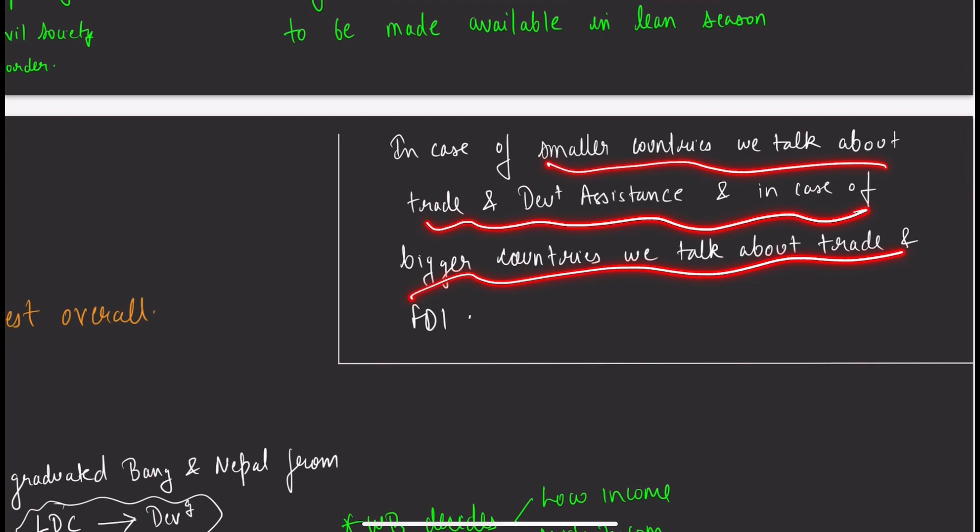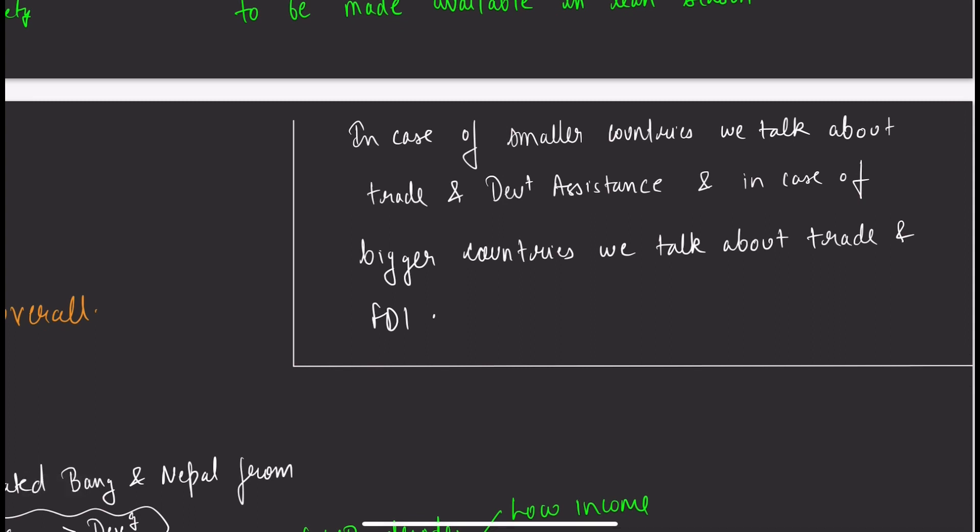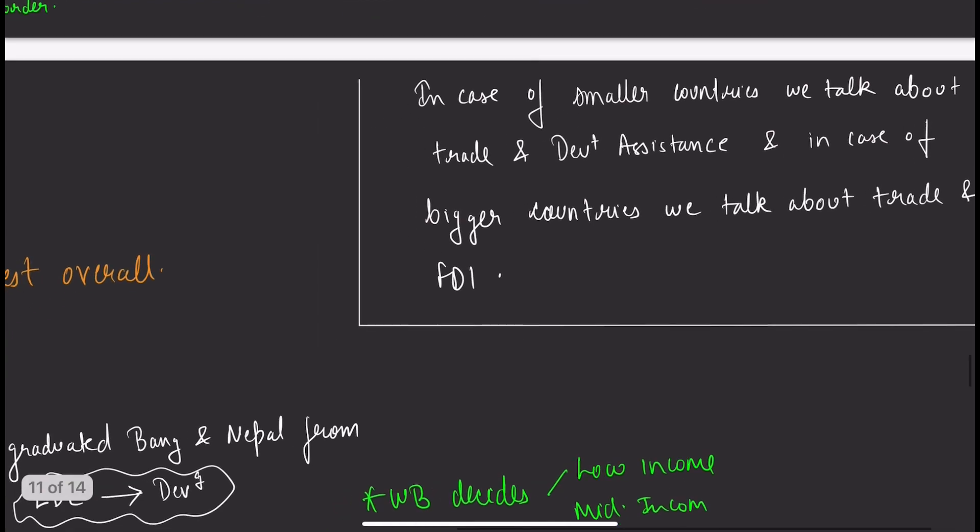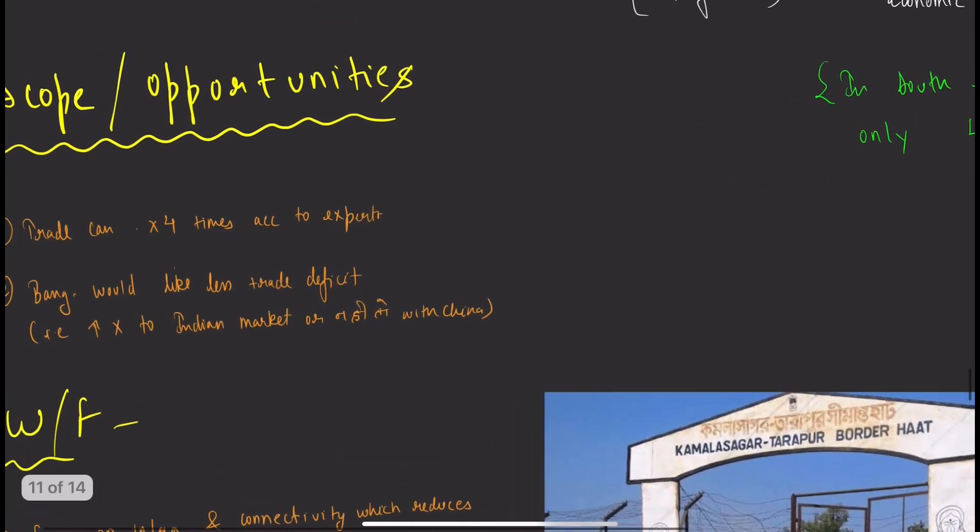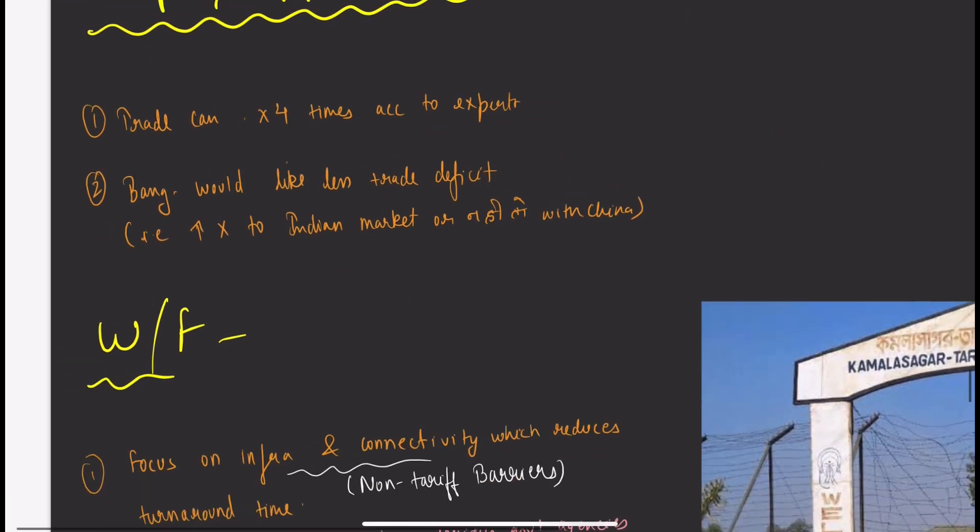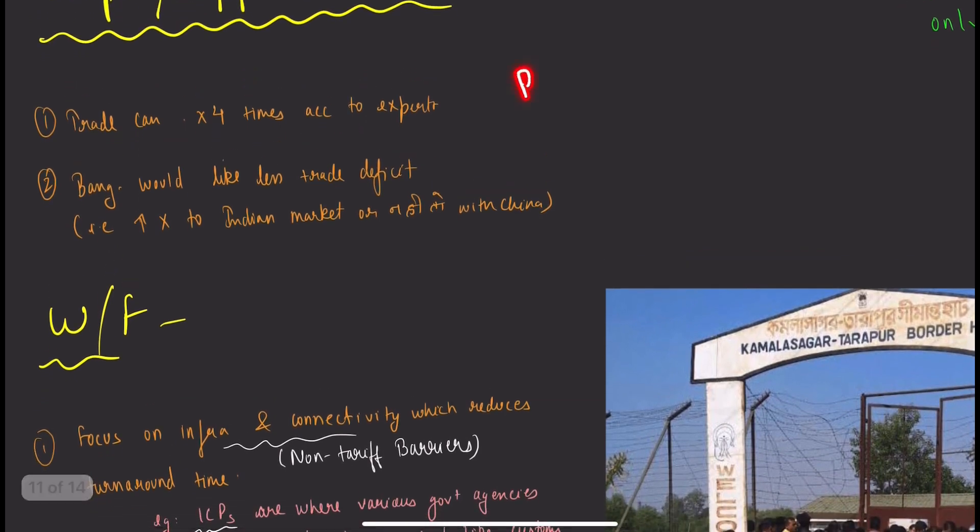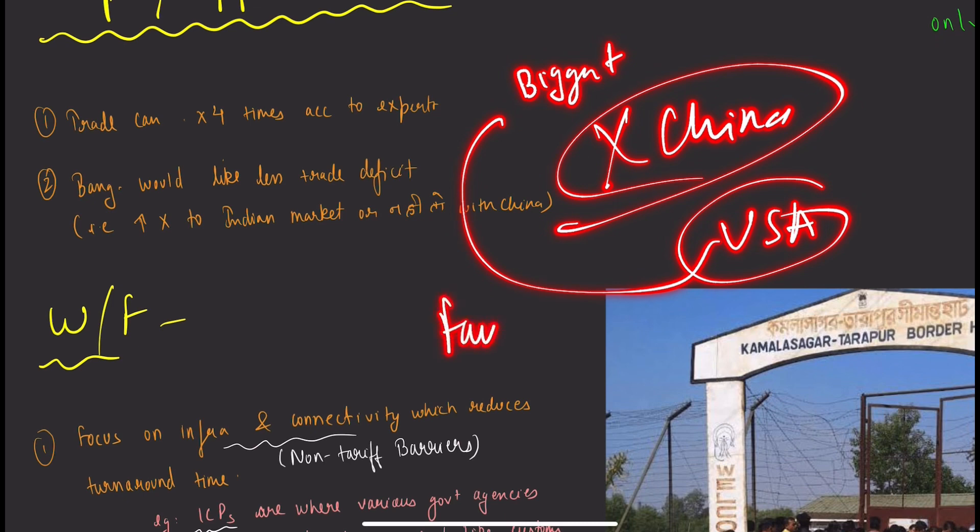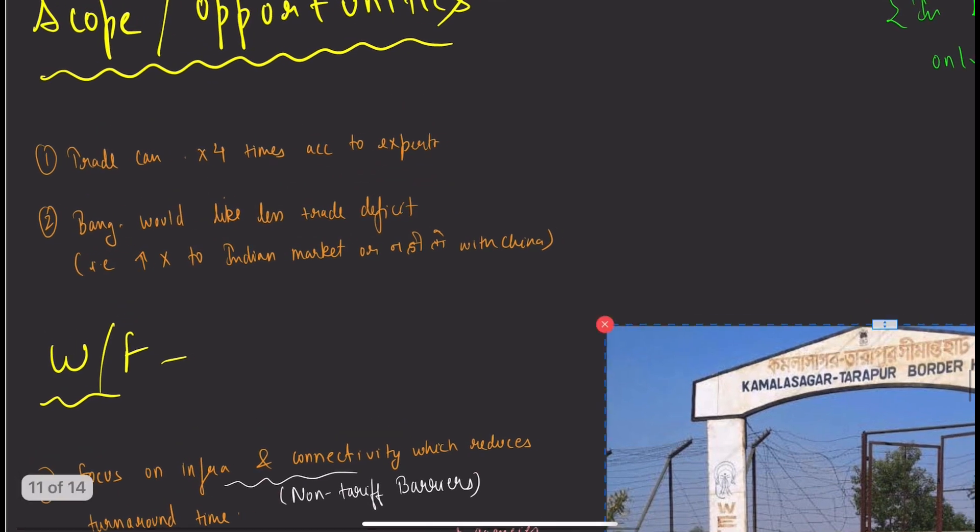For smaller countries, we talk about trade and development assistance. For bigger countries, we discuss trade and FDI. We have scope of trading which can multiply by four. Currently at 10 billion trade, we have potential of crossing 40 billion. Bangladesh would like to reduce its trade deficit.